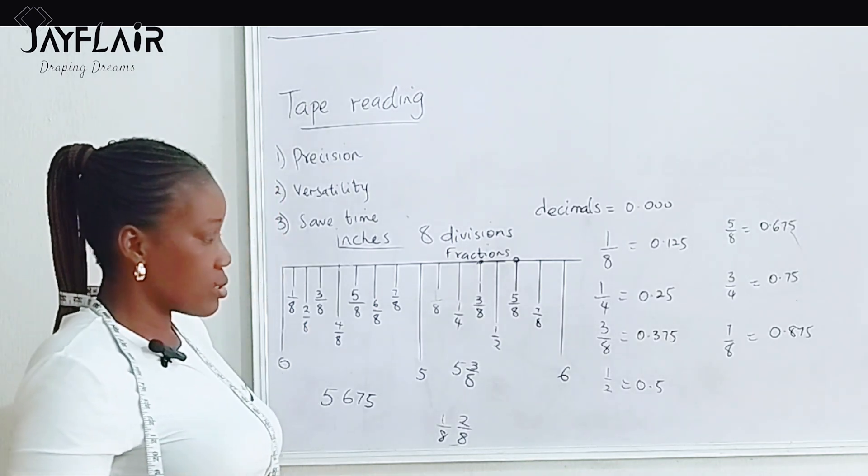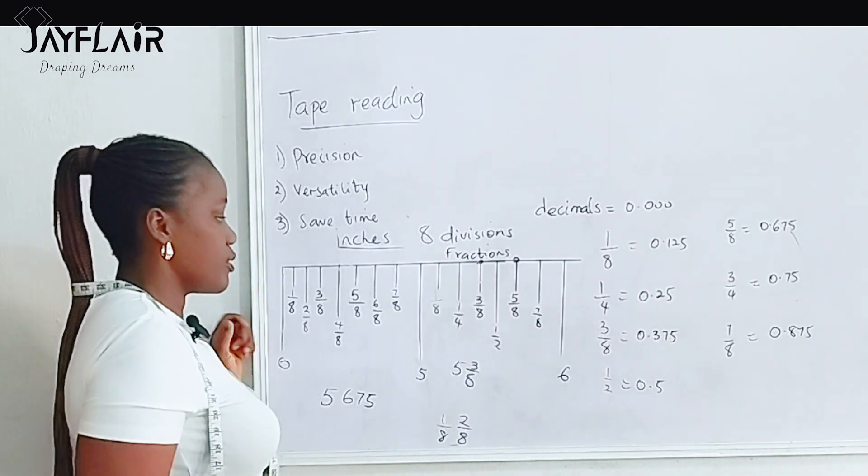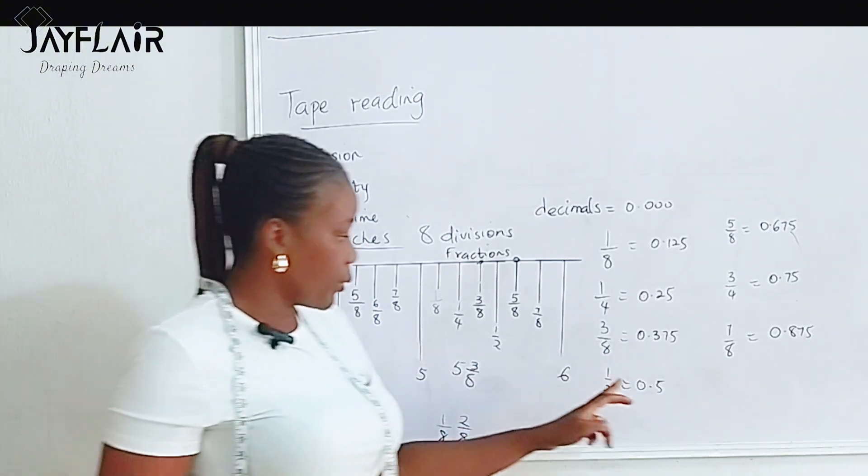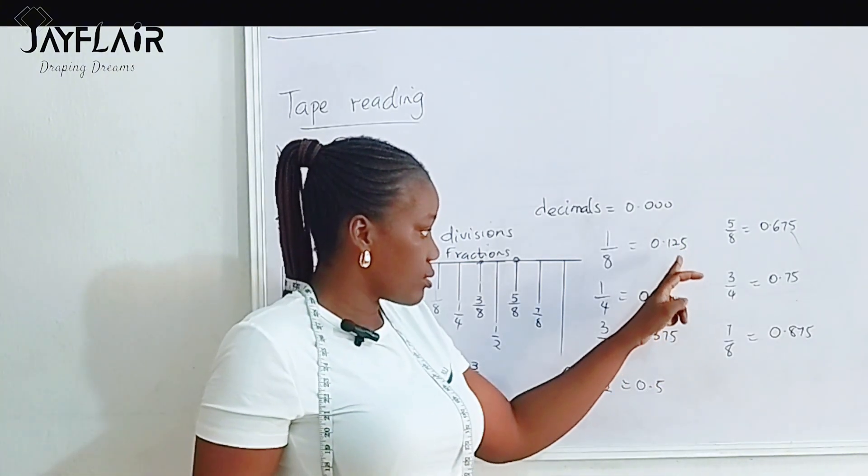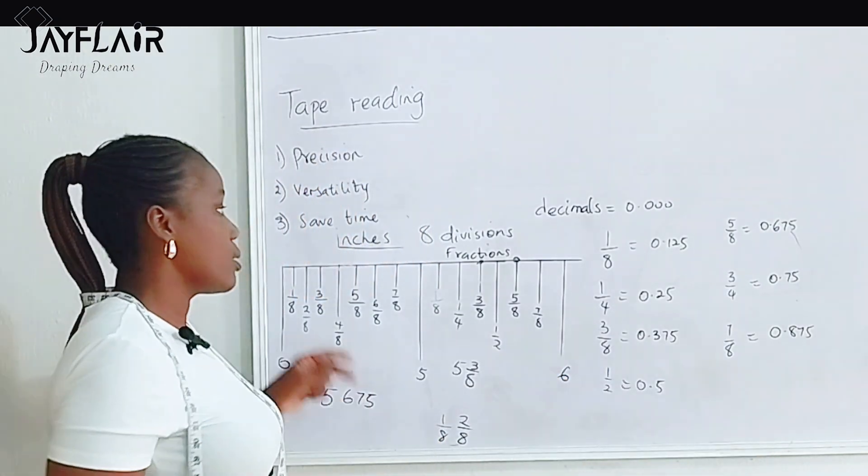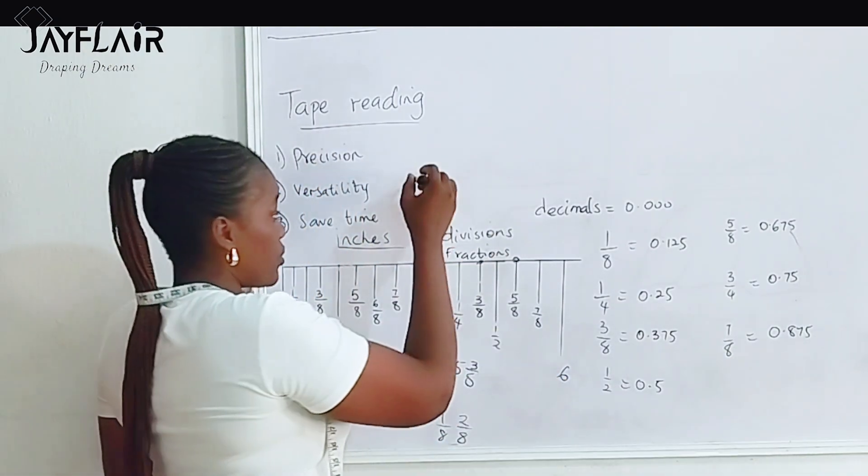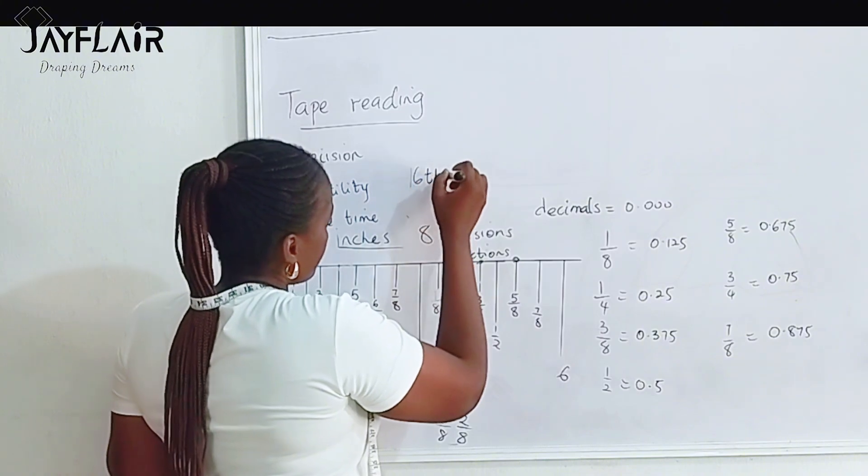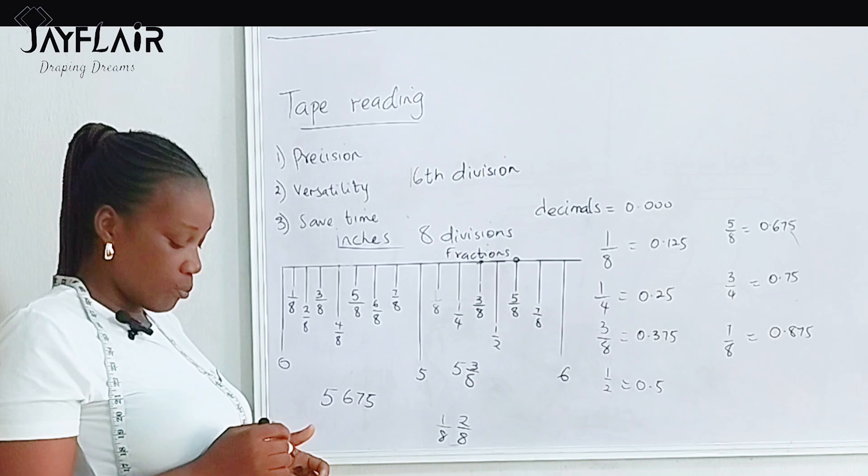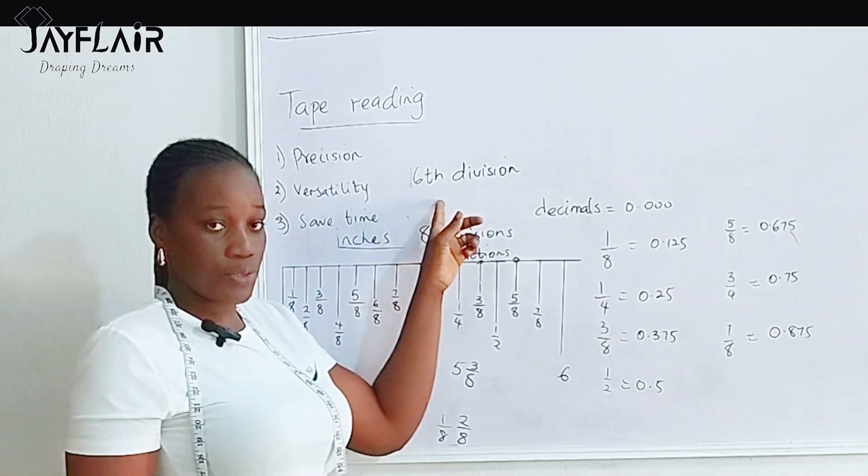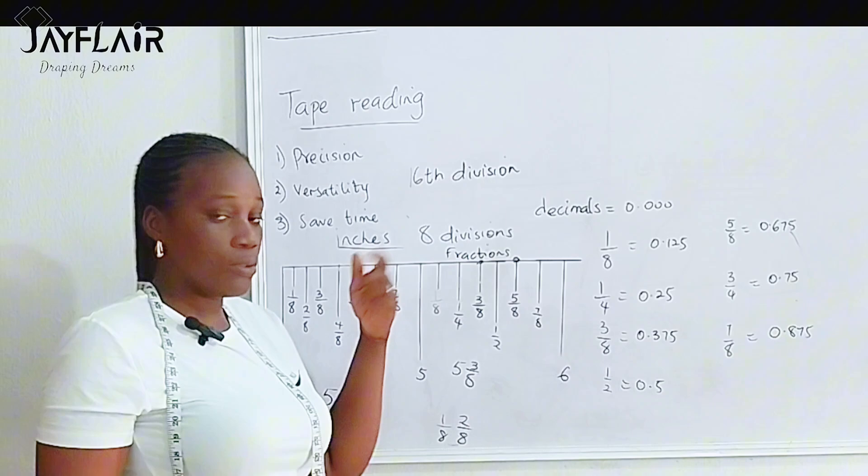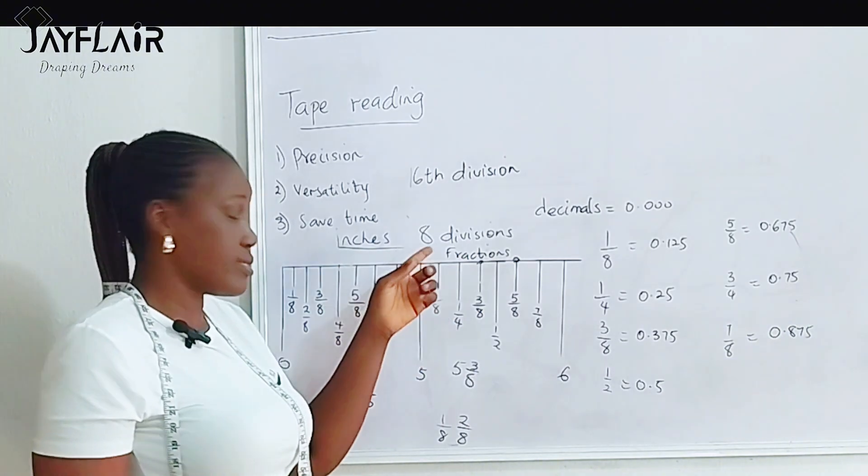Now another thing that I want us to note is sometimes when we calculate, the answer does not fall within 0.125 to 0.875. And that is because there is another division, which is the 16th division.